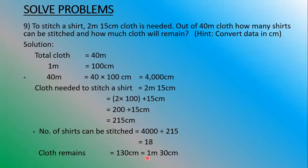Now we convert the centimeters into meters. 130 centimeters is equal to 1 meter 30 centimeters. Since 1 meter is 100 centimeters, we take the last two digits as centimeters and the remaining number as meters. So 130 divided by 100 gives 1 meter 30 centimeters.